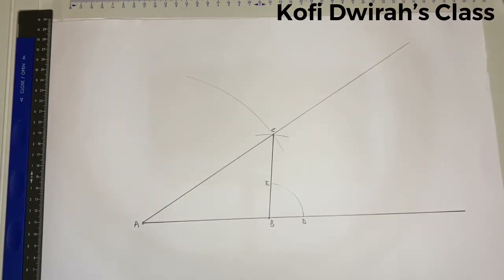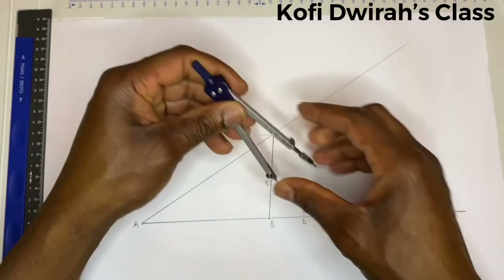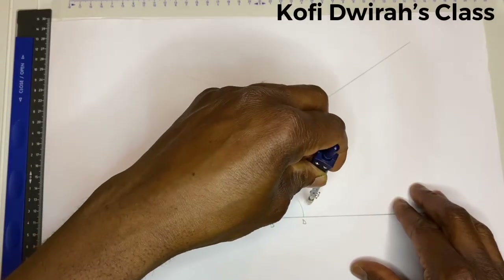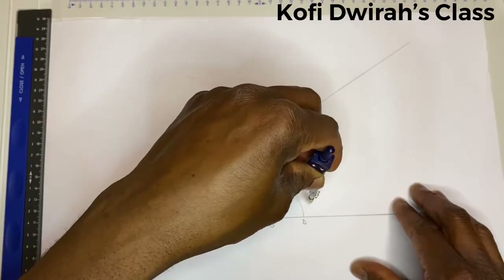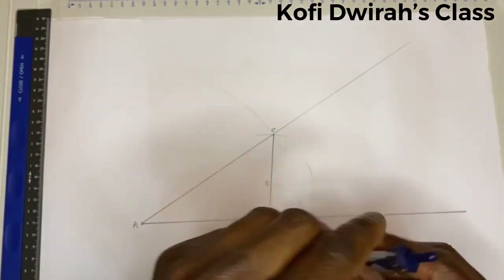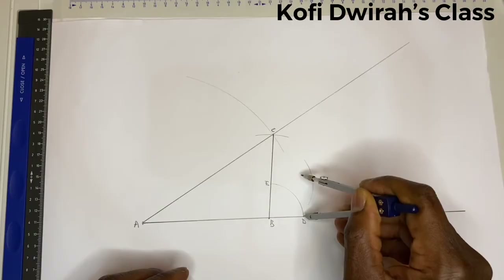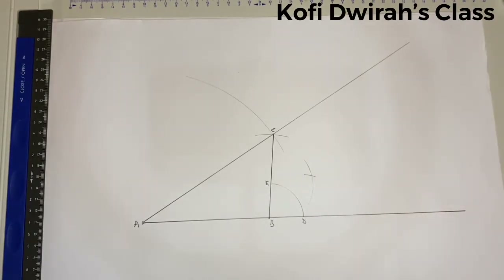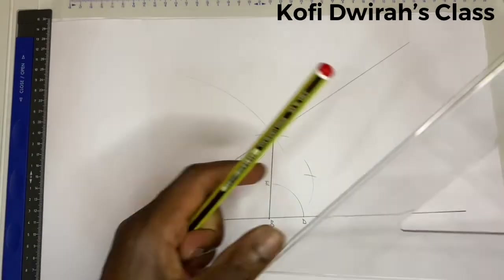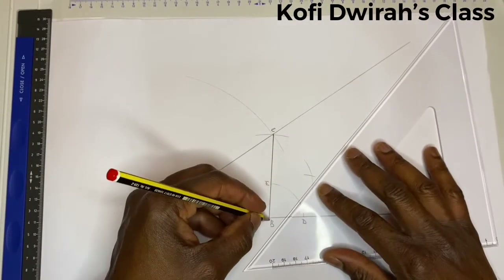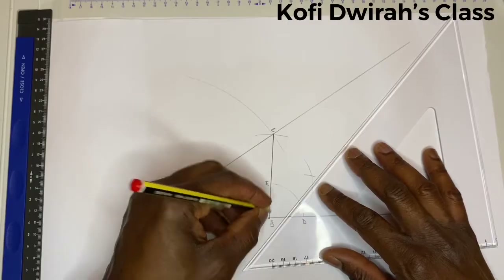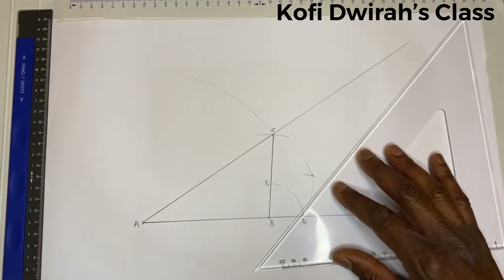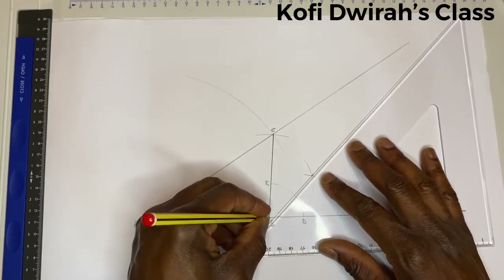You bisect this angle. From point D you draw your arc using the same radius, then at point E you draw another arc. Then you draw a line from here through this intersection point — that gives you the angle bisector from B.